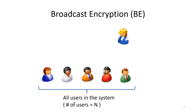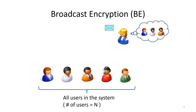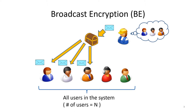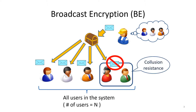Since this talk is about broadcast encryption, I'm going to explain the notion. Let us consider a system which consists of N users. A user who wants to encrypt a message for a subset of users prepares the message and encrypts it to obtain a ciphertext. This ciphertext should be decryptable for the intended receivers, but not for users outside the intended set. Furthermore, users cannot obtain any information of the message even if users outside the intended recipient set collude. We call this security notion collusion resistance and require it by default.